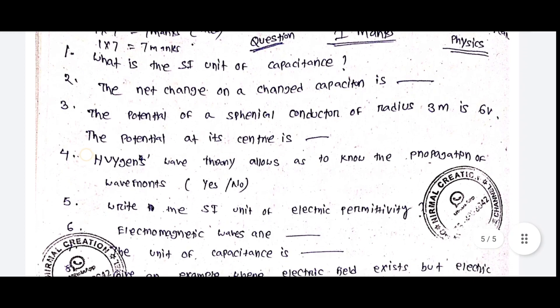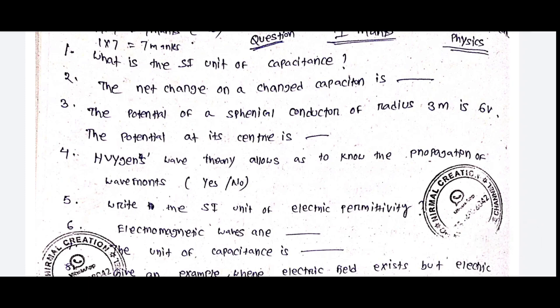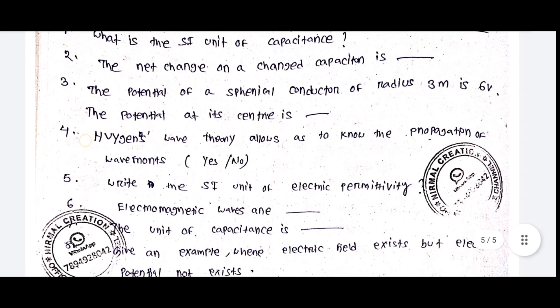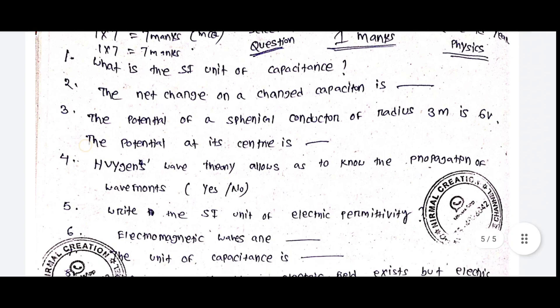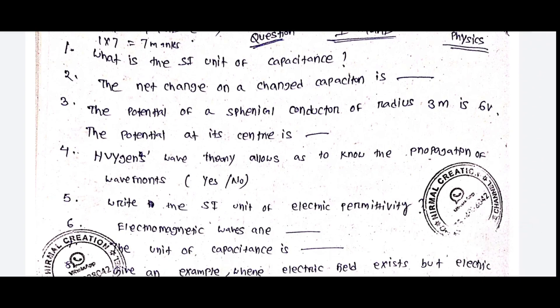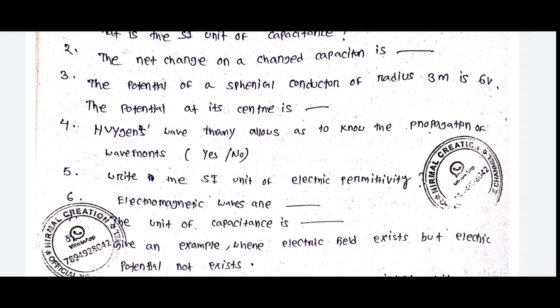Group A questions: What is the SI unit of capacitance? The net charge on a charged capacitor is dash. The potential of a spherical conductor of radius 3 meters is 6 volts. The potential at its center is dash.